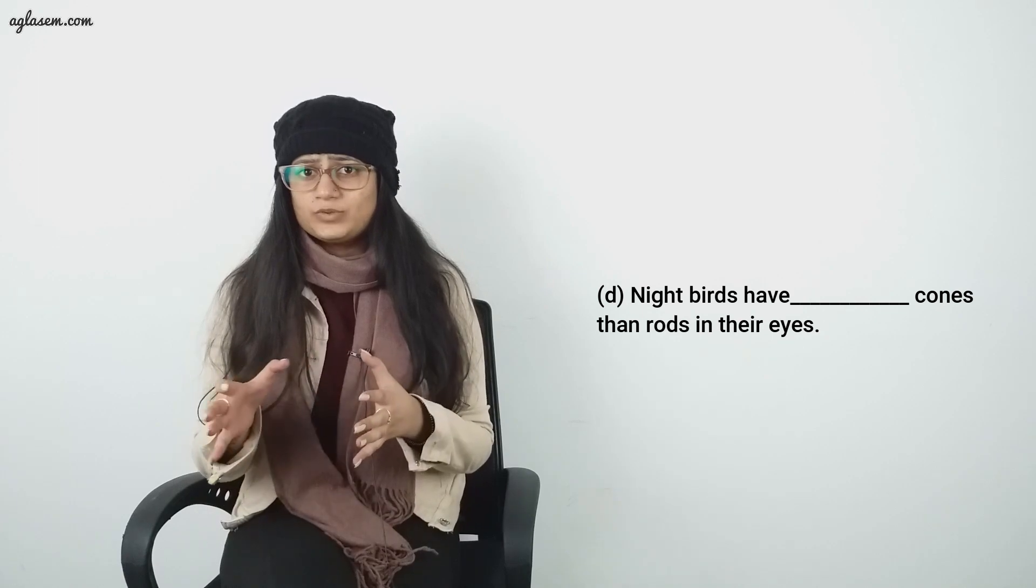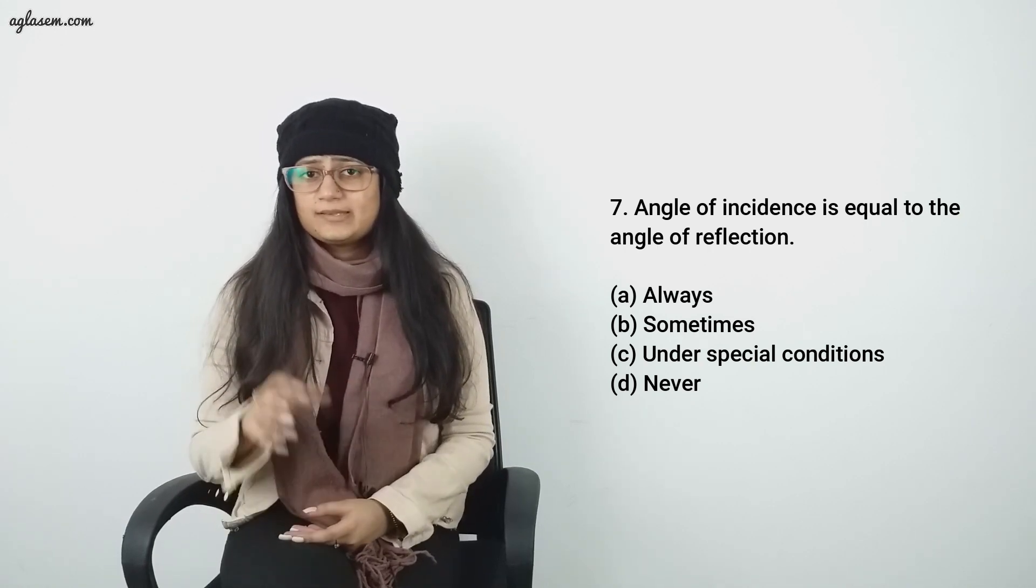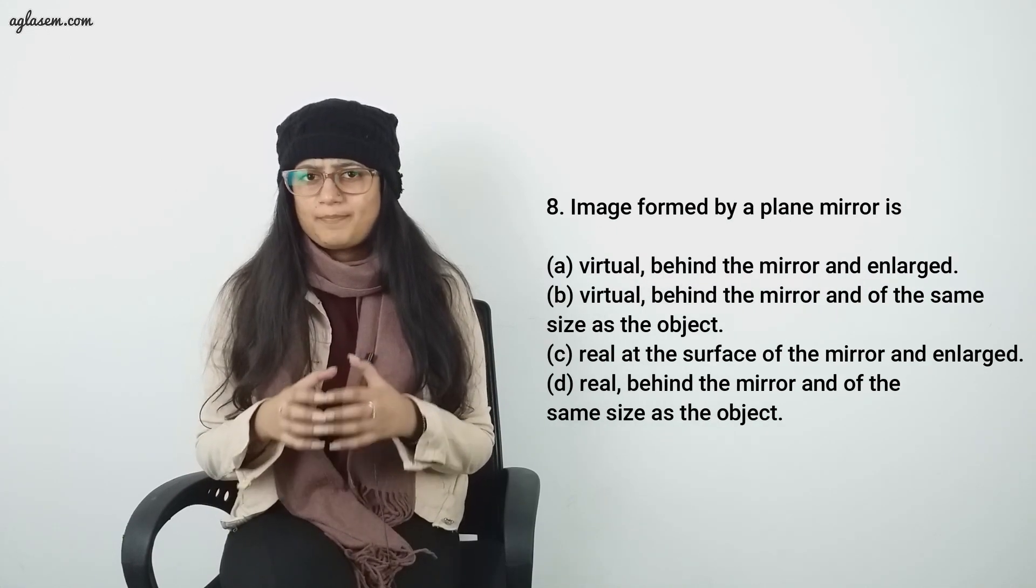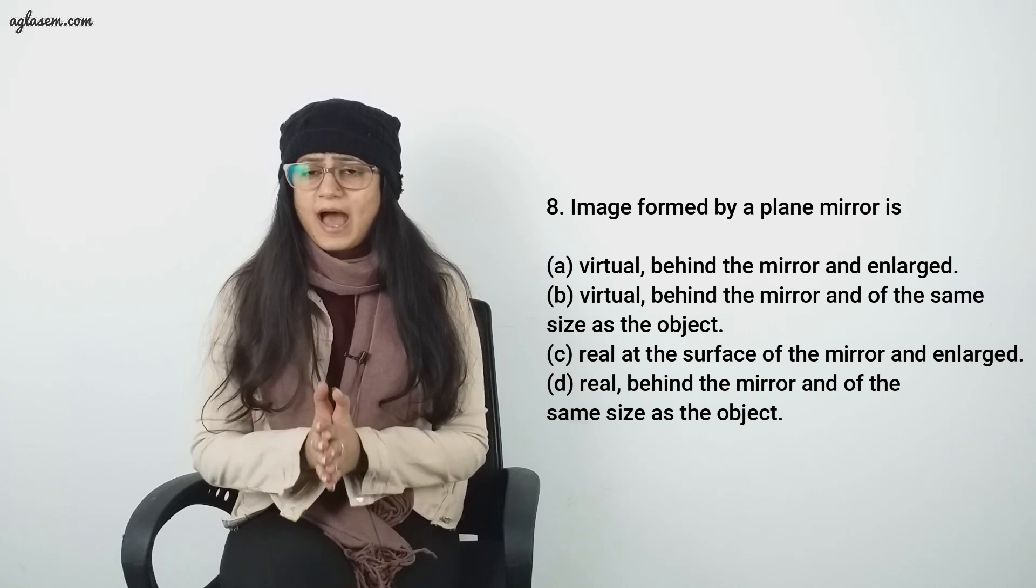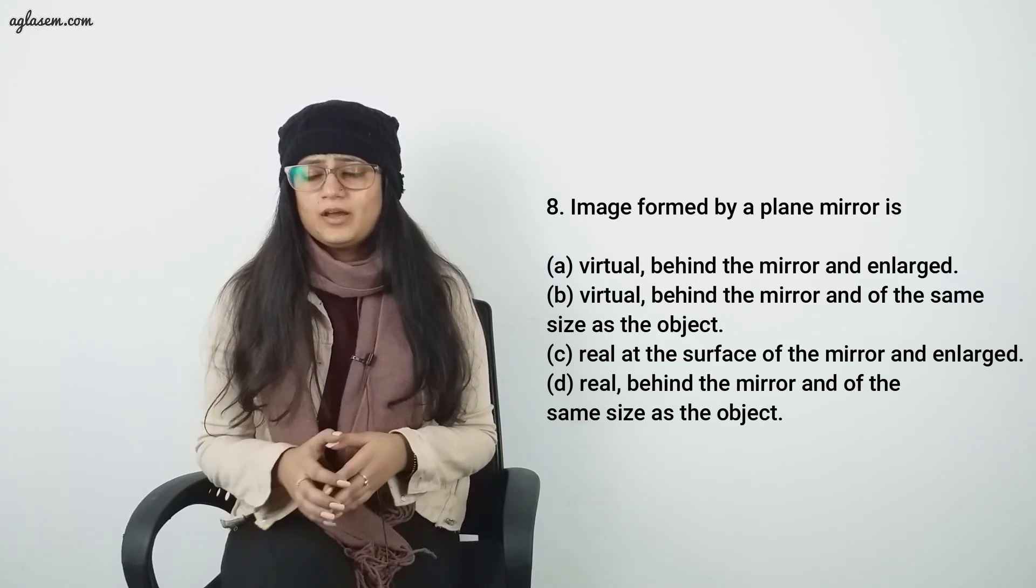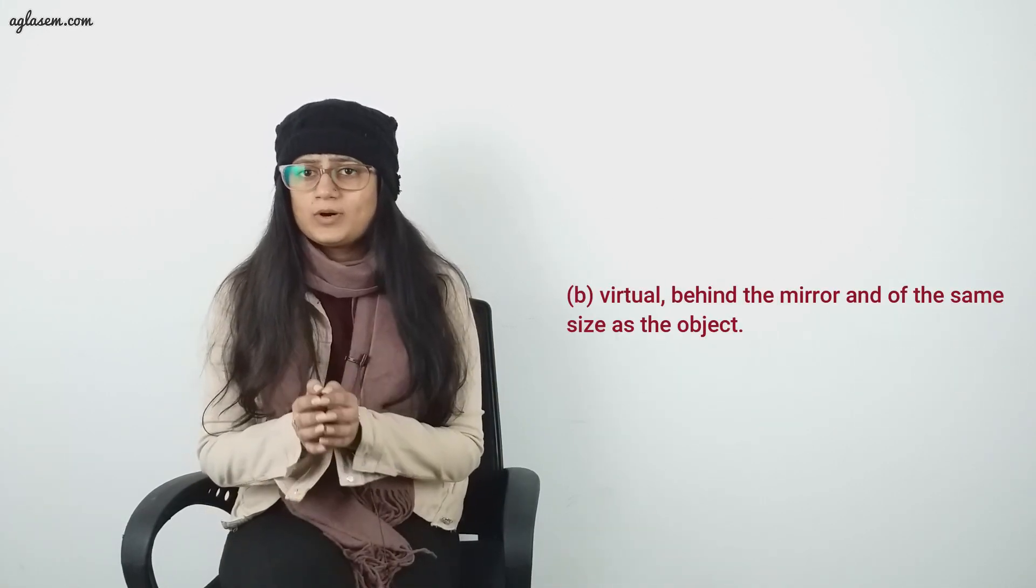Part D: Night birds have less cones than rods in their eyes. Question number 7: Angle of incidence is equal to the angle of reflection: A) always, B) sometimes, C) under special conditions, D) never. Answer is A: always. Question number 8: Image formed by a plane mirror is: A) virtual, behind the mirror and enlarged, B) virtual, behind the mirror and of the same size as the object, C) real at the surface of the mirror and enlarged, D) real behind the mirror and the same as the object. Answer: Part B, virtual, behind the mirror and of the same size as the object.